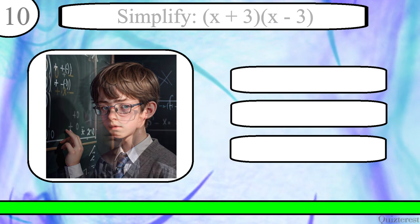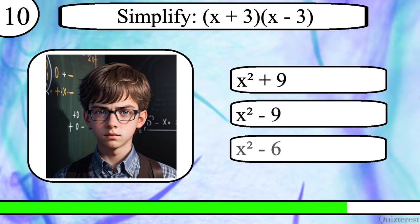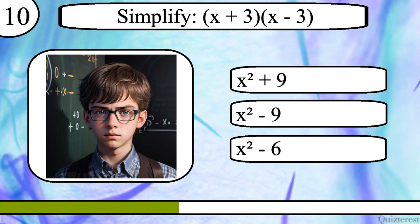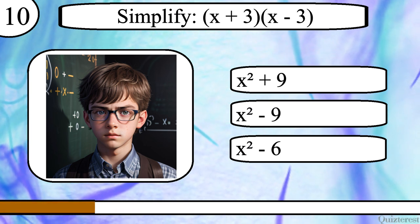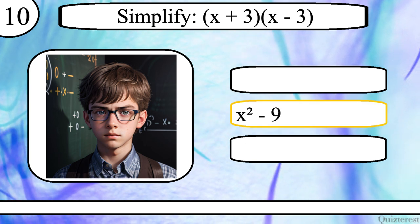Question 10. Simplify x plus 3 times x minus 3. x squared plus 9, x squared minus 9, or x squared minus 6? The correct answer is x squared minus 9.